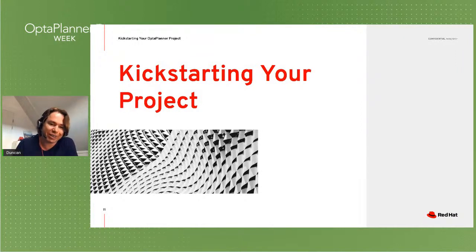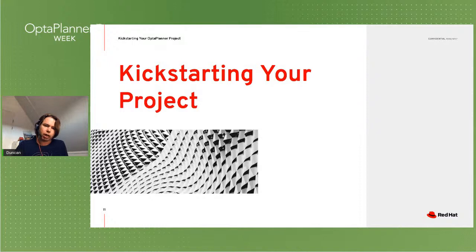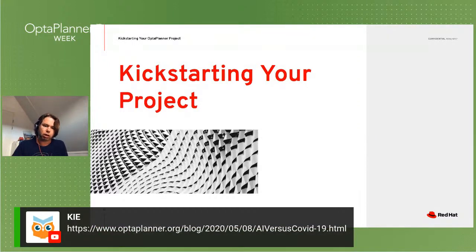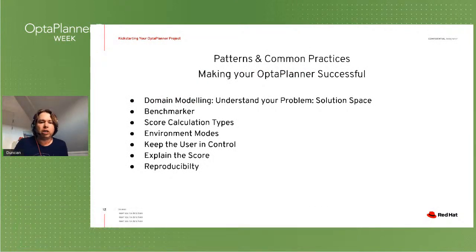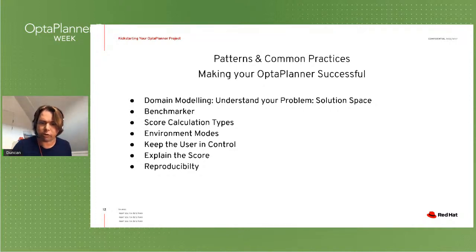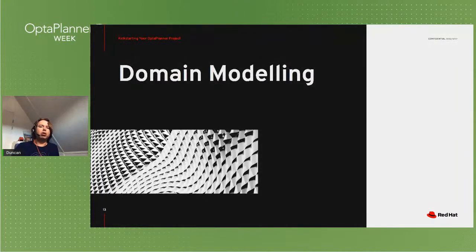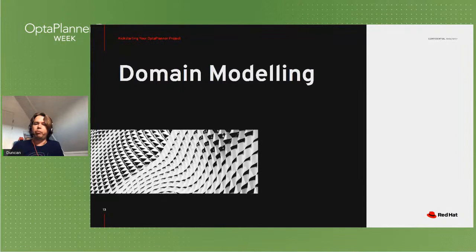Now Duncan moves to the key things he and colleagues have observed at customer sites — where Red Hat came in through consulting to help improve OptaPlanner projects. Topics to cover include domain modeling, the benchmarker, score calculation types, environment modes, and more. These are areas where common problems have been seen at almost every customer engagement.